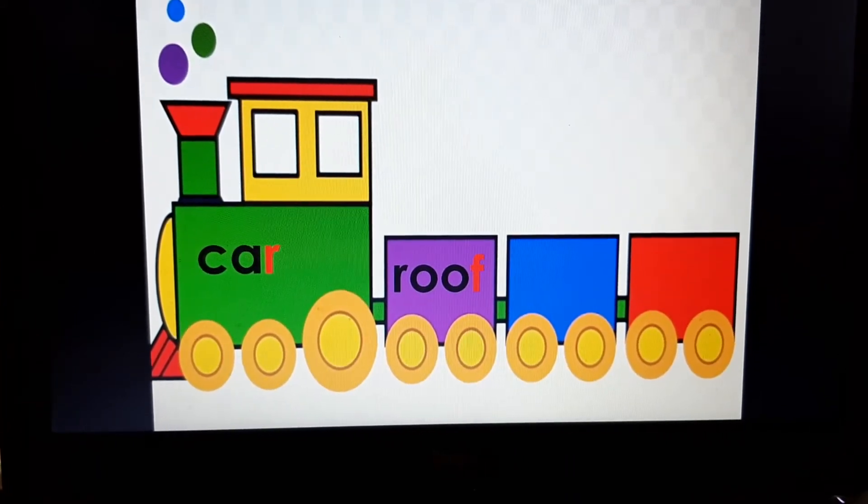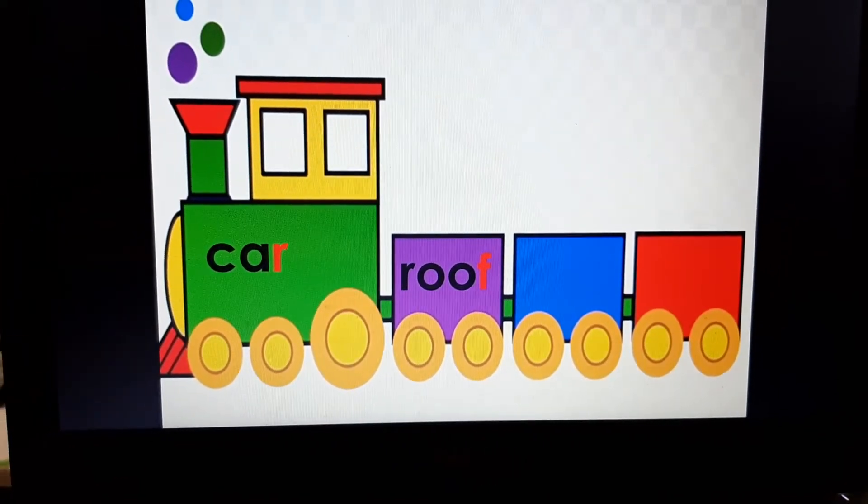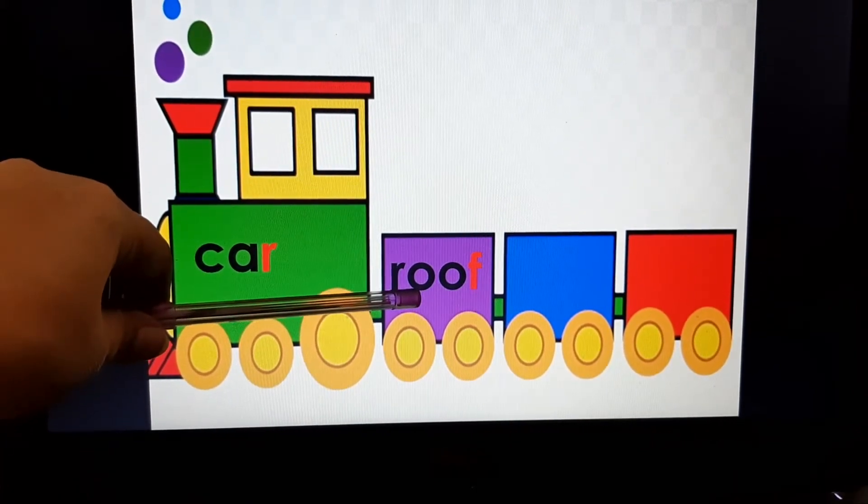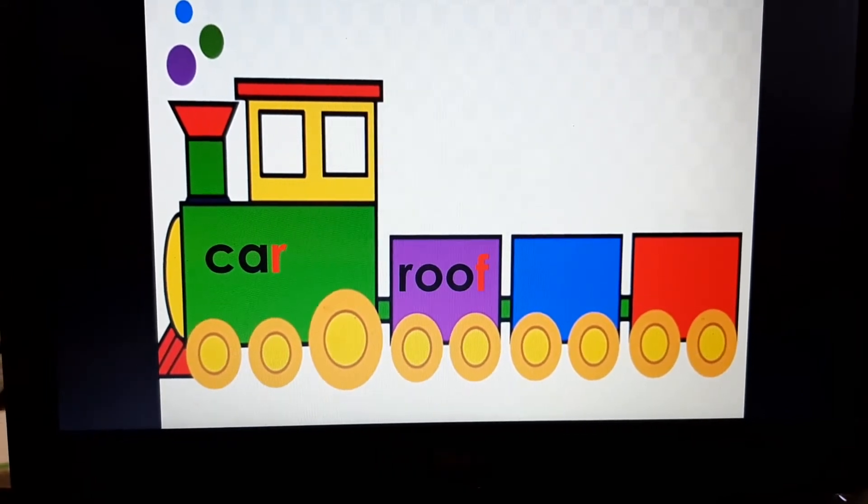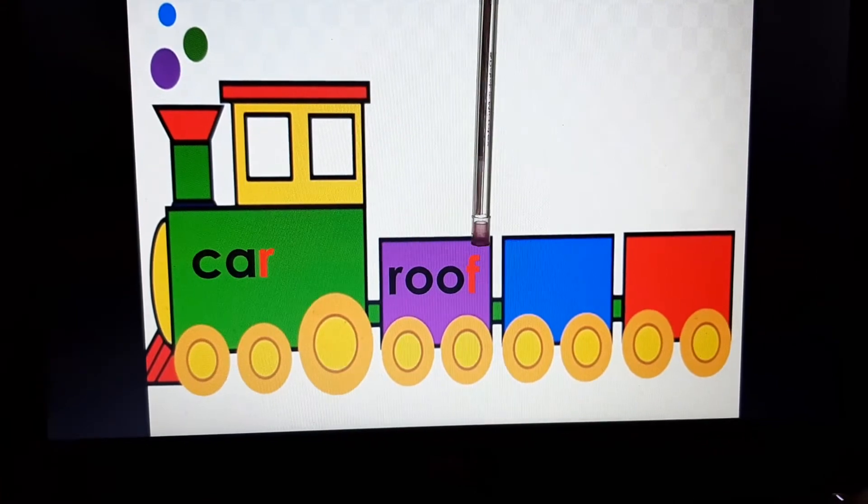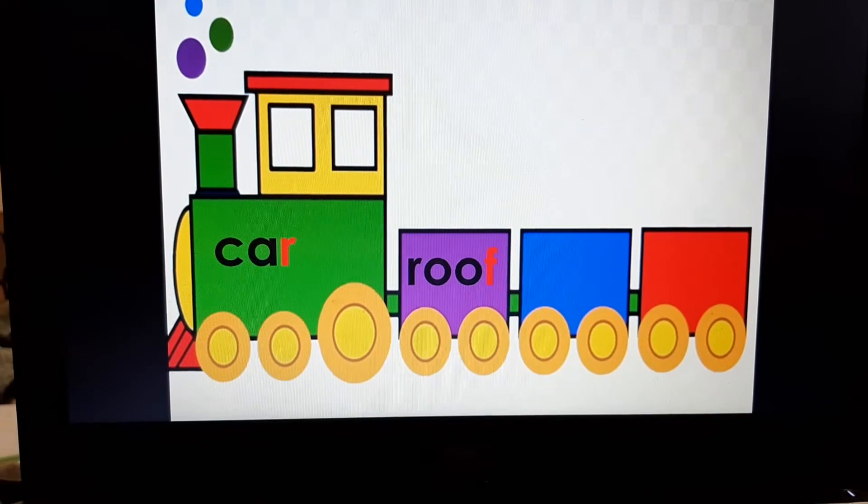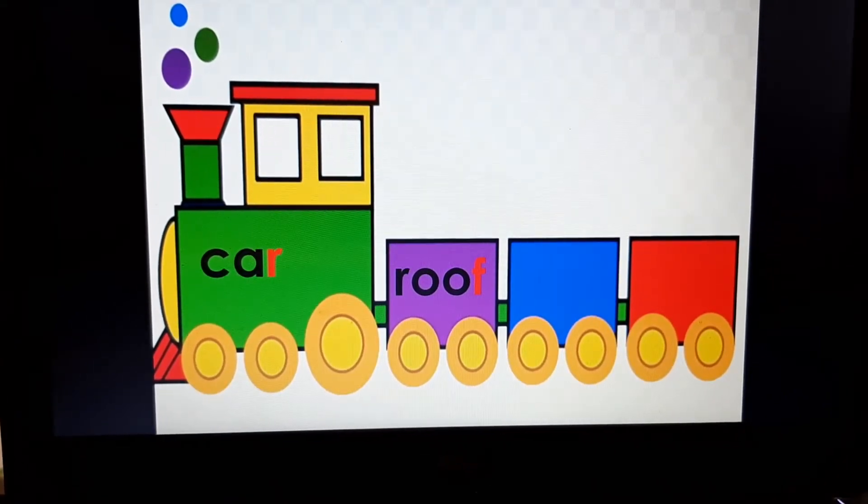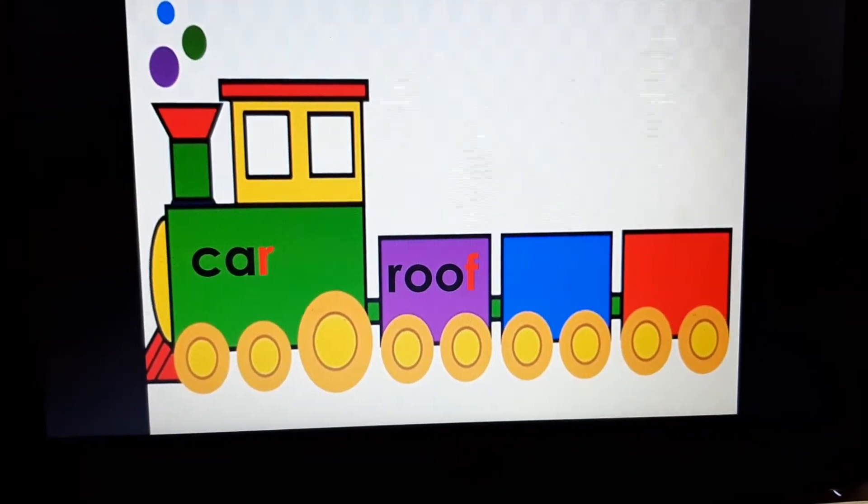So the last letter is R. Now read this word and look at the last letter. R-O-O-F, roof. R-O-O-F, roof. Now the last letter is F. So we will begin our next word with letter F. Last letter will become the first letter now.